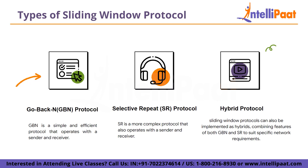Go-Back-N protocol is a simple and efficient protocol that operates with a sender and a receiver. The sender can transmit multiple packets before waiting for acknowledgments, and the receiver acknowledges correctly received frames in sequential order, allowing for cumulative acknowledgments. If the receiver detects a missing or corrupted frame, it discards all subsequent frames until the missing one is received. The sender then detects missing acknowledgments and retransmits all unacknowledged frames from the missing one onward. GBN is straightforward to implement and ideal for high-speed, error-prone networks.